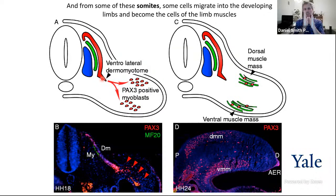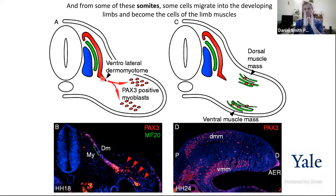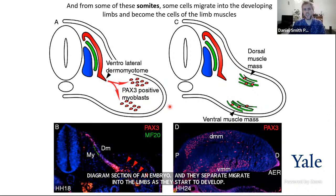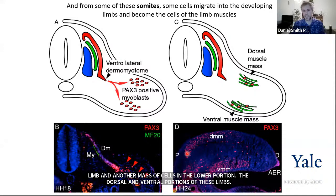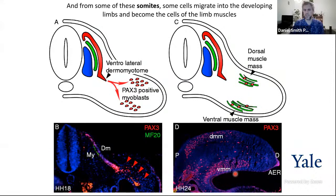From these somites, some cells are going to separate and migrate into the limbs when they start developing. In an embryo that looks like a little worm, limbs are going to start popping out and growing at specific parts of the body. When this happens, some cells are going to invade these limbs and form one mass on the upper portion of the limb and another mass in the lower portion — the dorsal and ventral portions of these limbs.